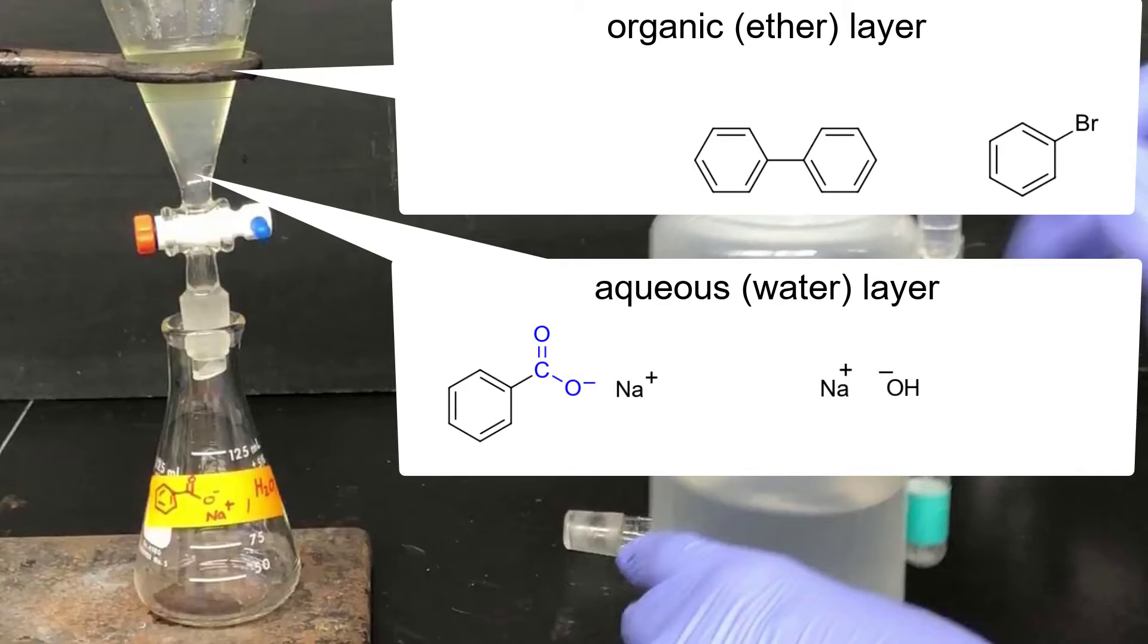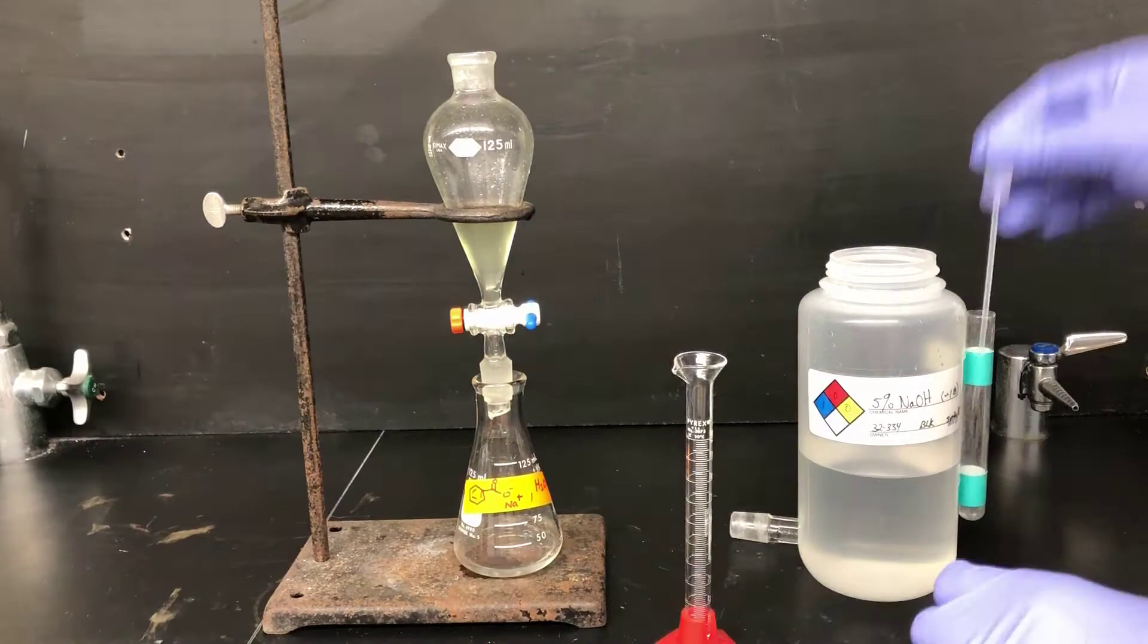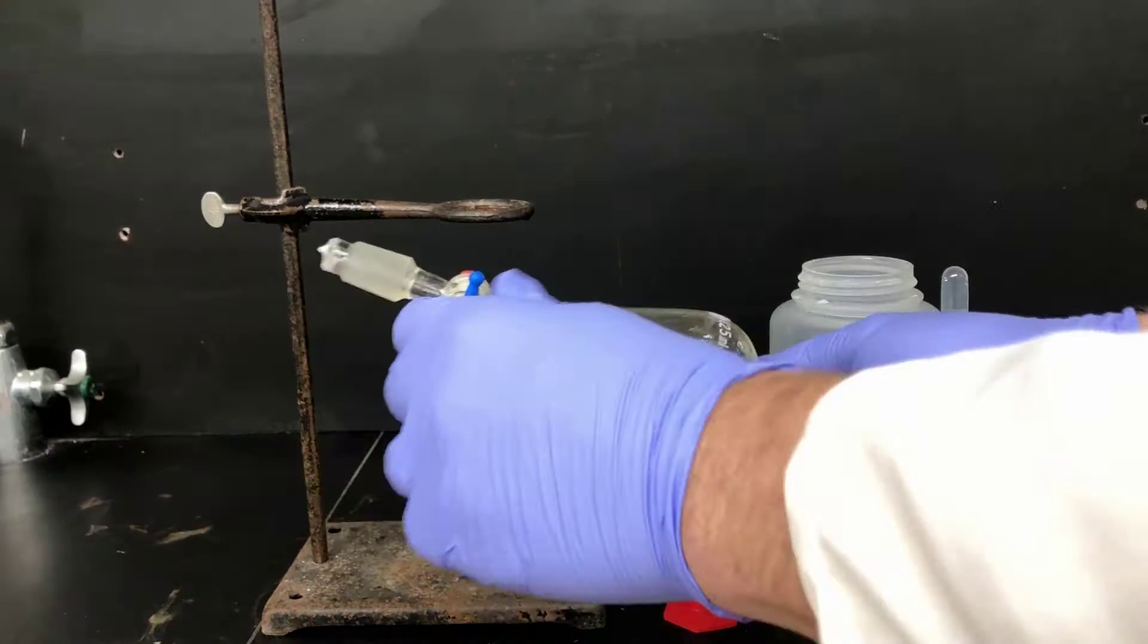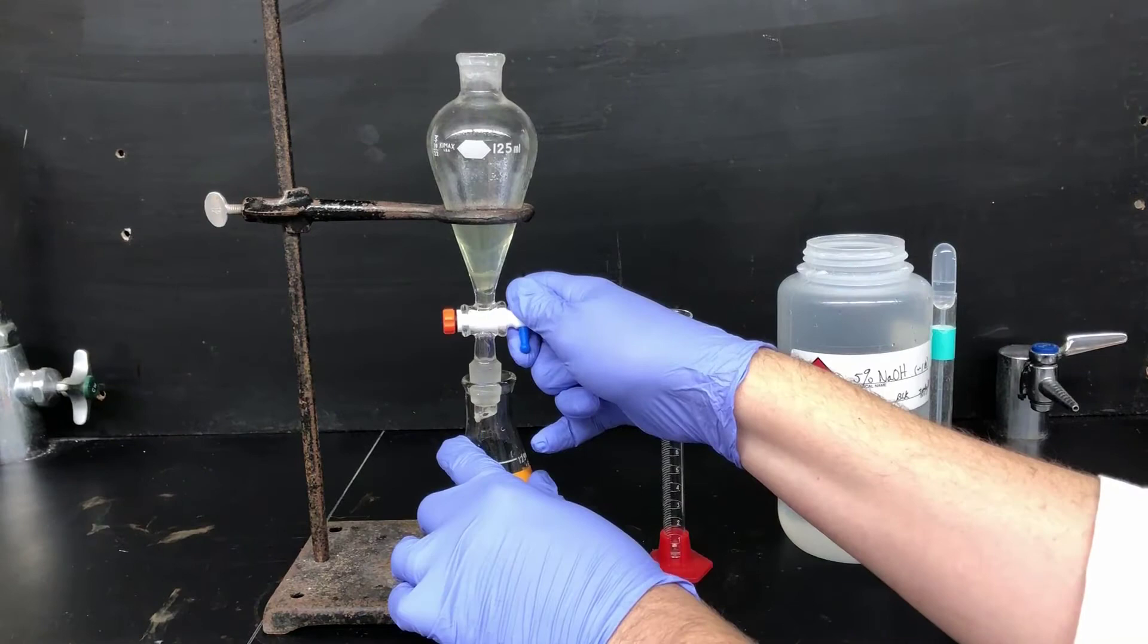This is my first extraction of the ether layer with aqueous sodium hydroxide. It will get most of the benzoic acid product deprotonated as sodium benzoate, but I want to repeat the process a couple more times to ensure that I get a better yield. So, here I'm measuring out another 8 milliliters of the 5% NaOH, and I'll put that in the separatory funnel, shake it, allow the layers to separate, and then drain the lower aqueous layer, and combine it with the aqueous layer from the previous extraction. Then I'll repeat that extraction one more time for a total of 3 extractions with 8 milliliters of sodium hydroxide solution each.